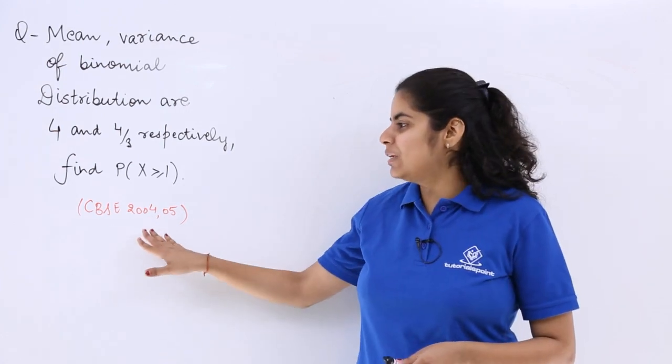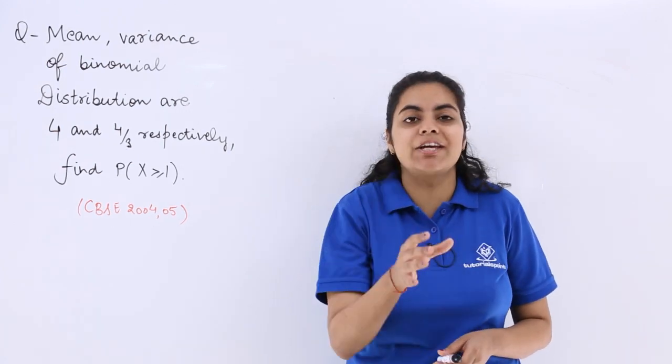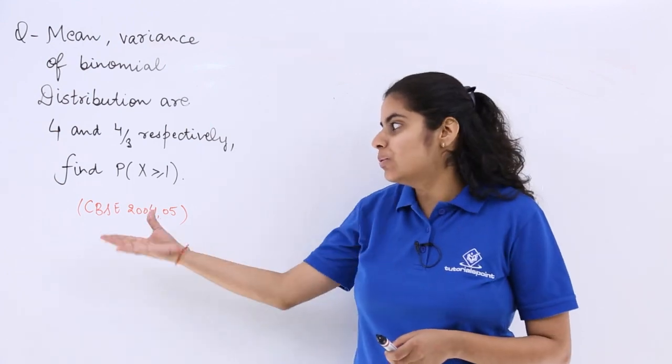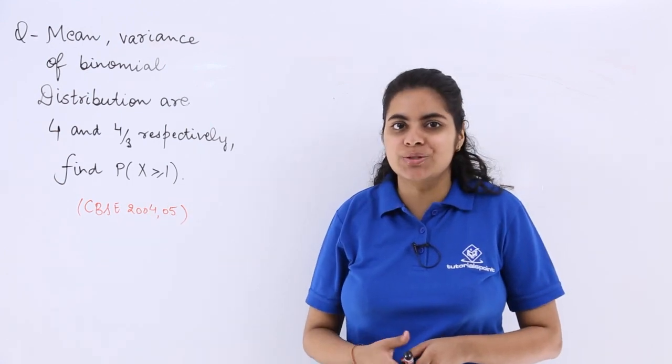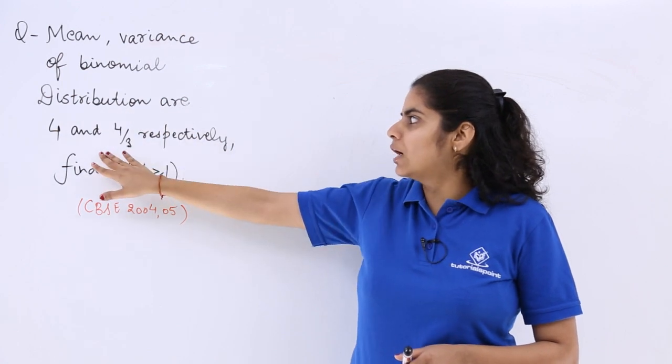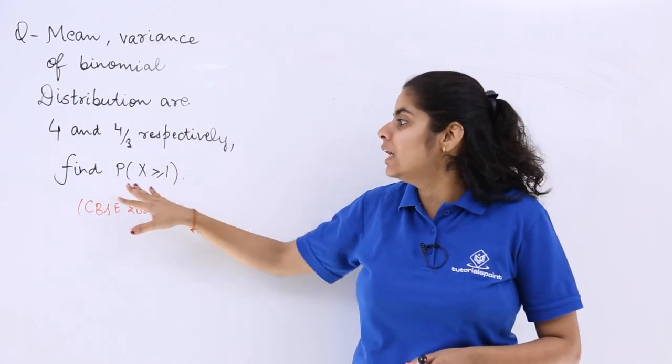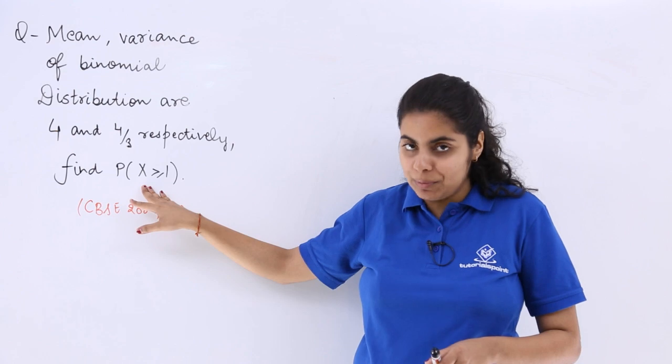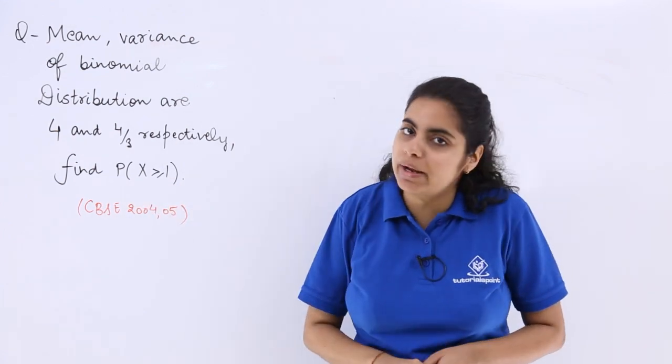Now this is a question asked in the CVS examination both in the consecutive years 2004 and 2005. You can see the importance of such type of a question. It says the mean and variance of binomial distribution are 4 and 4 by 3 respectively. Find P(X≥1), or probability of X greater than equal to 1.